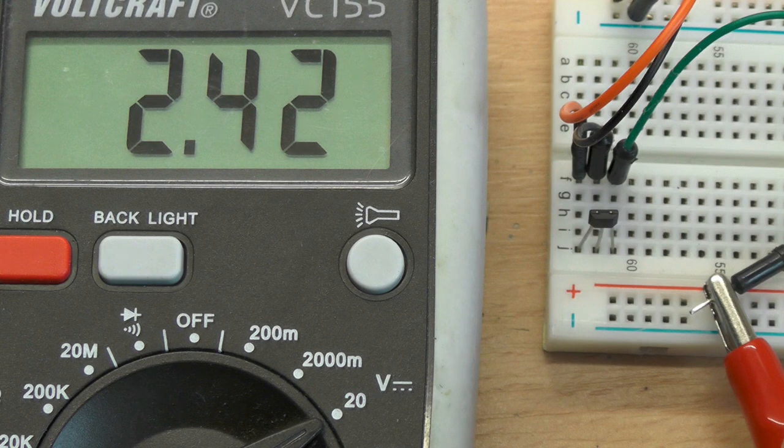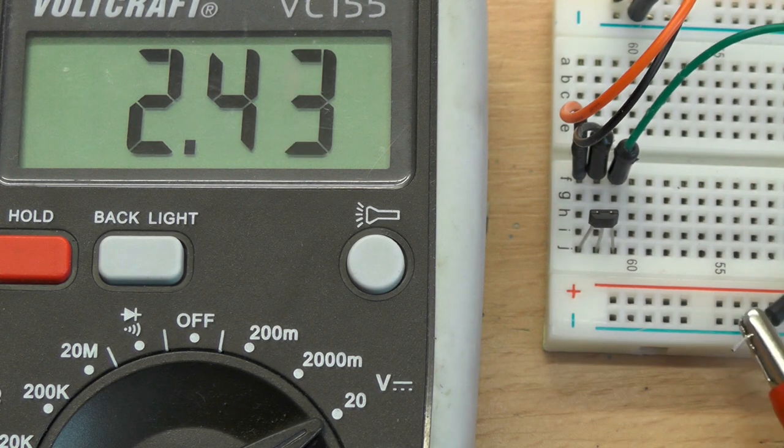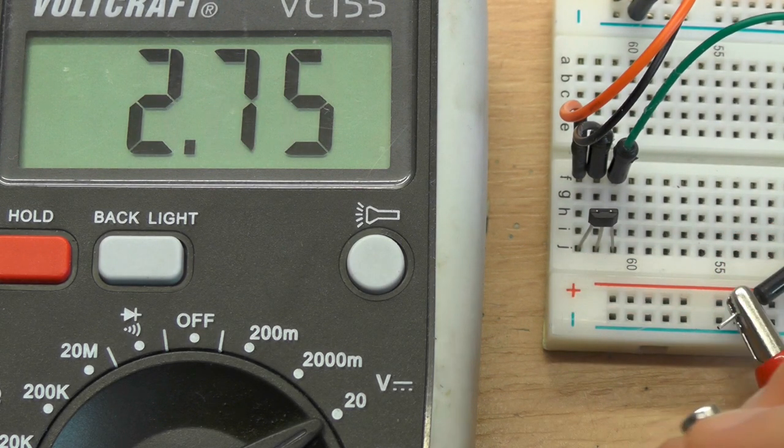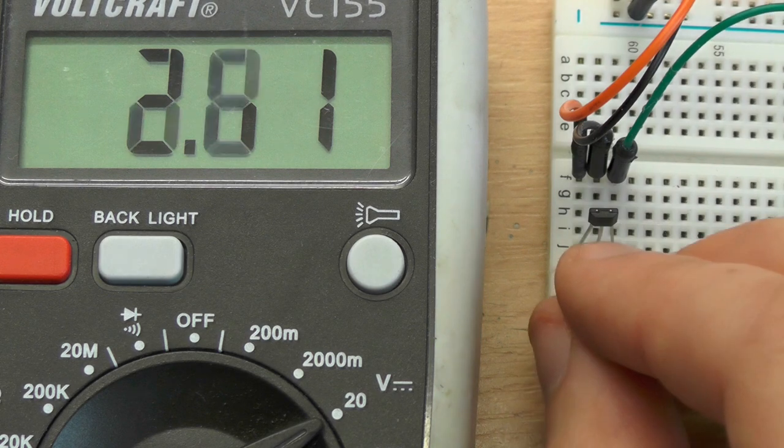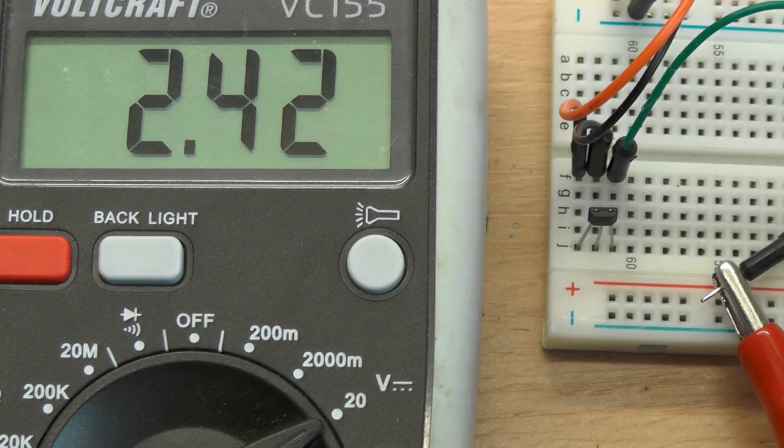So what can we build with this? I want to build a 3D printer and I need some end stops. With these linear Hall Effect Sensors we can build an adjustable end stop that's contactless, so we don't have any bouncing and it doesn't wear out.